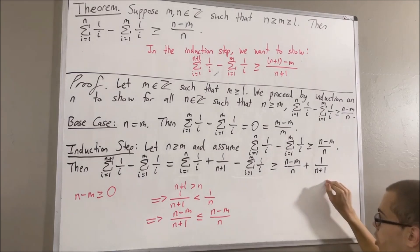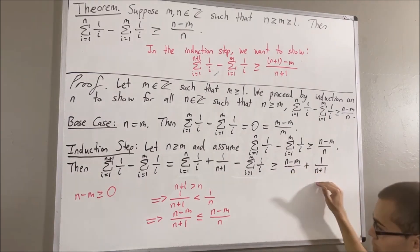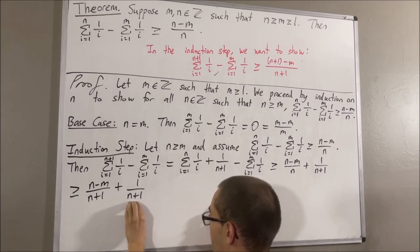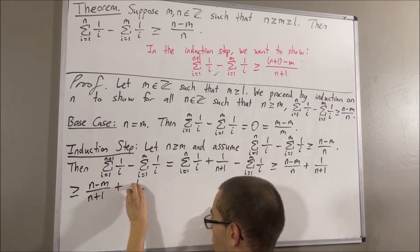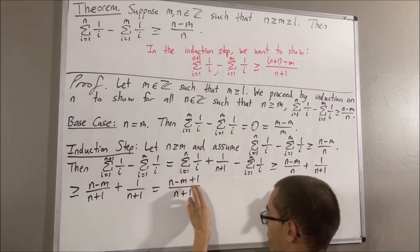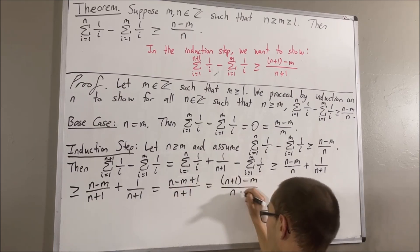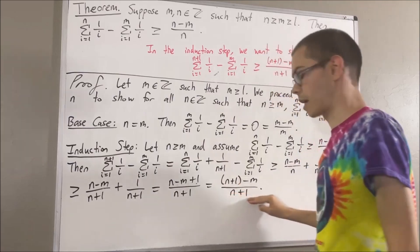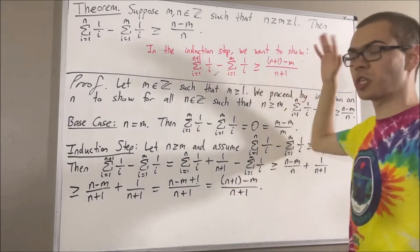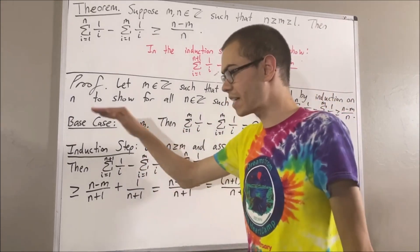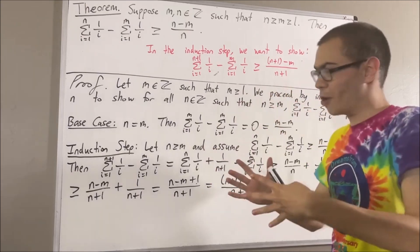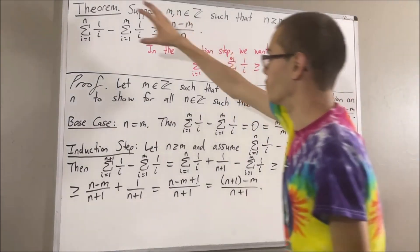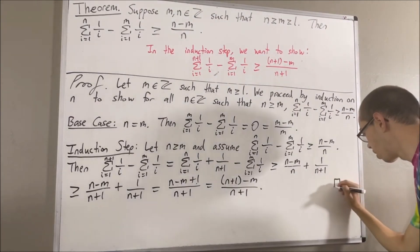Therefore, this entire thing must be greater than or equal to n minus m over n plus 1 plus 1 over n plus 1. And then, since these two fractions have the same denominator, if we add them together, it's just going to be n minus m plus 1 over n plus 1. And the numerator is just n plus 1 minus m. That is exactly what we wanted. So, we have shown this inequality holds, and that completes the induction step. Because we've completed both the base case and the induction step, this closes the induction. We have proven through induction that this statement is true, and that amounts to proving the theorem. This completes the proof.